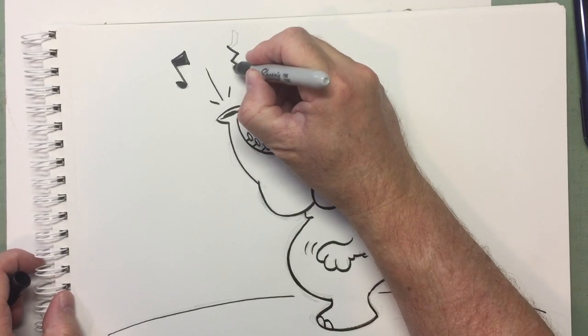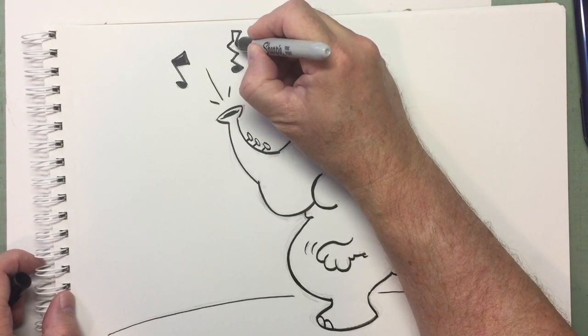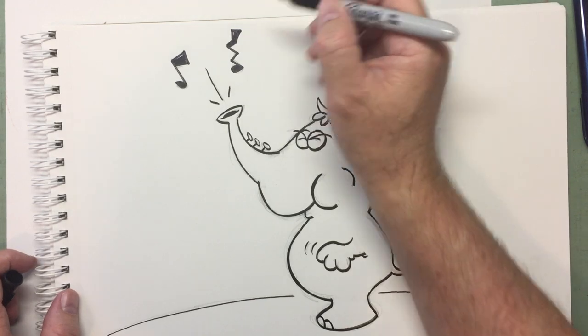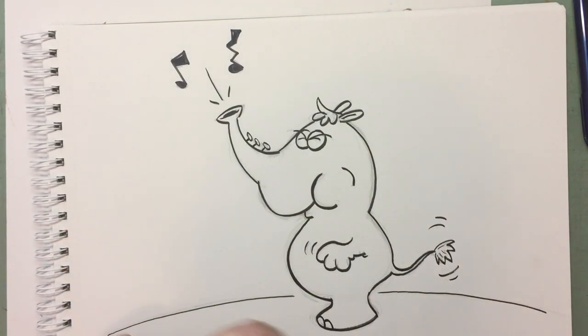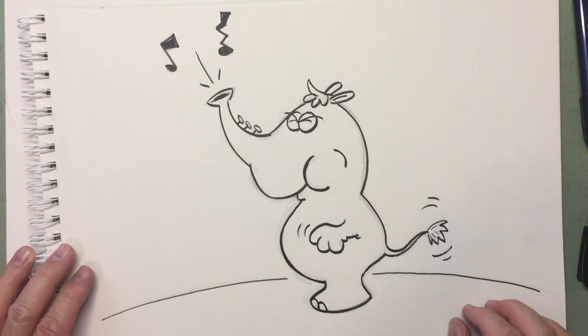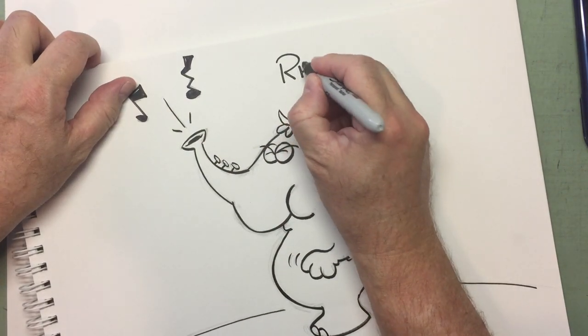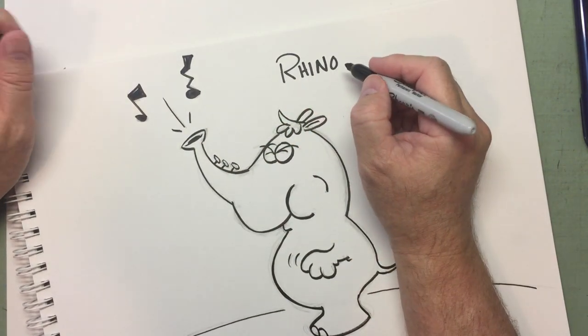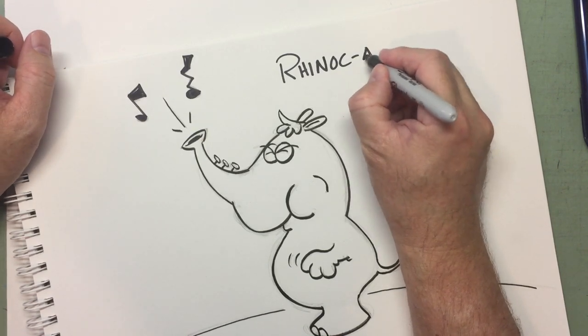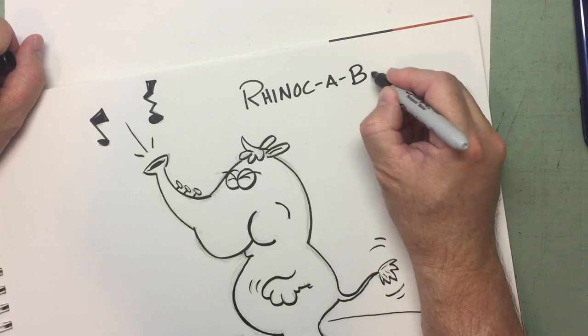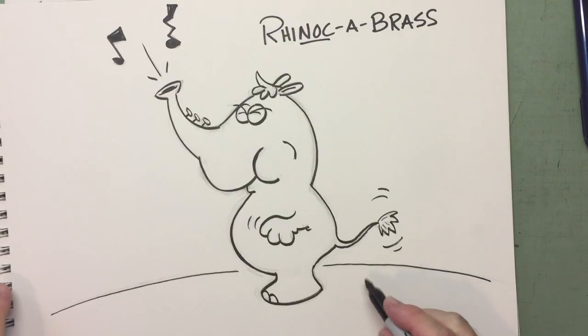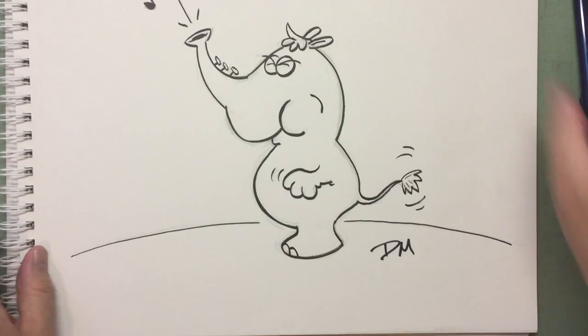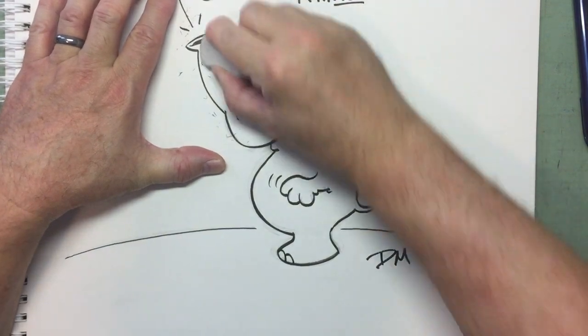This bent note comes out, maybe hit a sour note. If you've ever played instruments, sometimes you don't hit the right exact pitch and it comes out something like that. How do you spell this when you're making it up? The rhinoceros brass, the horn player. Let's do some erasing here, clean it up a little more.